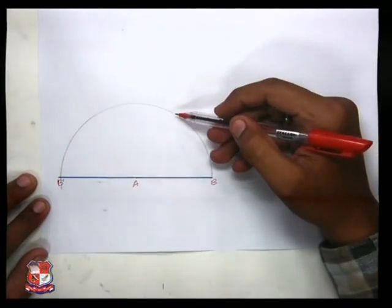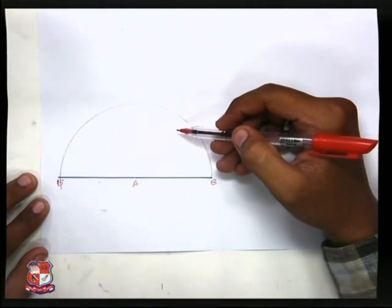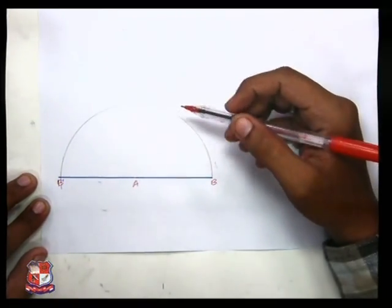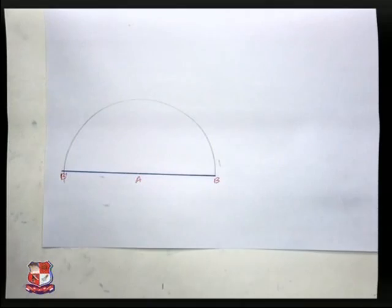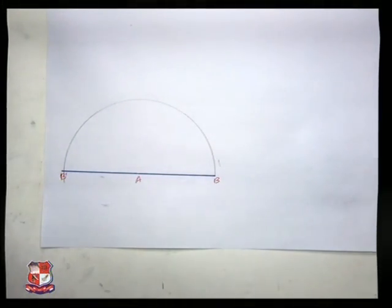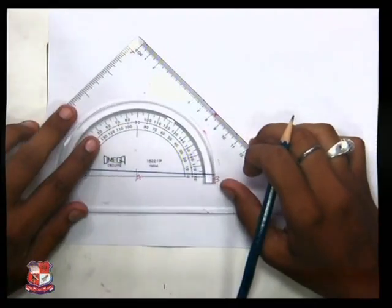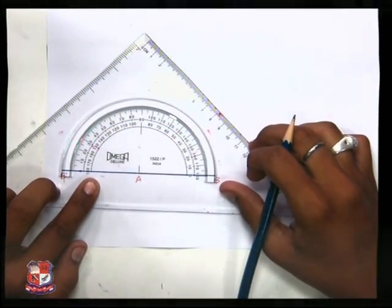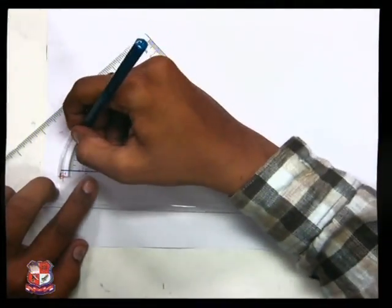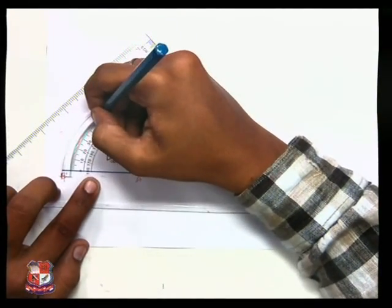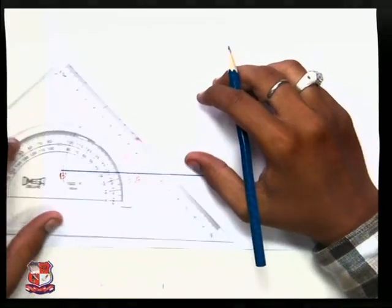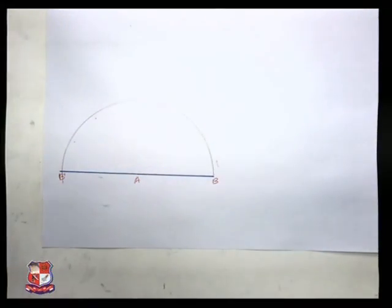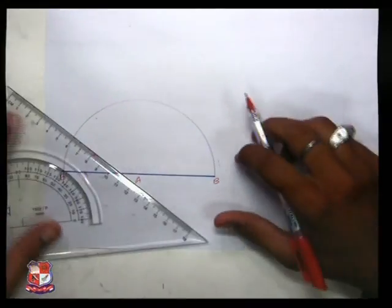Now we have got this semicircle. We want to draw a polygon of 7 sides. So we will divide this semicircle into 7 equal parts. How we can divide it? 180 divided by 7 is equal to 25.7. I have taken the divisions of a semicircle.